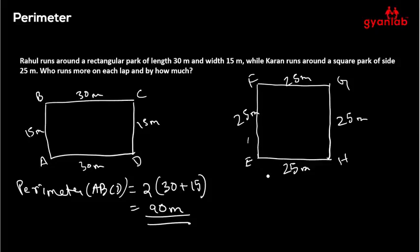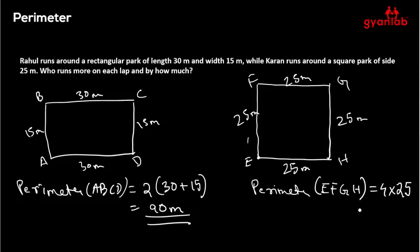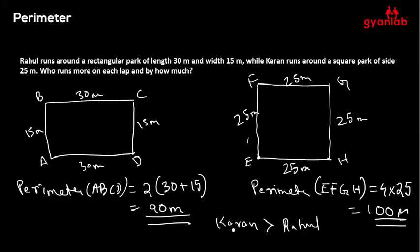Now let's find whether Current runs more. The perimeter of square EFGH = 4 × 25 = 100 meters. So Current runs 100 meters per lap, which is greater than Rahul's 90 meters. The difference is 100 − 90 = 10 meters. That's how easily you can solve problems like this using the perimeter of a figure.